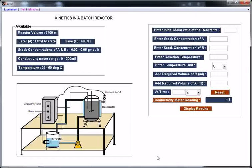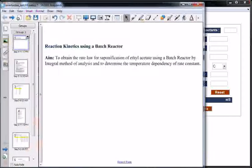This is the experimental window. Aim of this experiment is to obtain the rate law for saponification of ethyl acetate using a batch reactor by integral method of analysis and to determine the temperature dependency of rate constant.